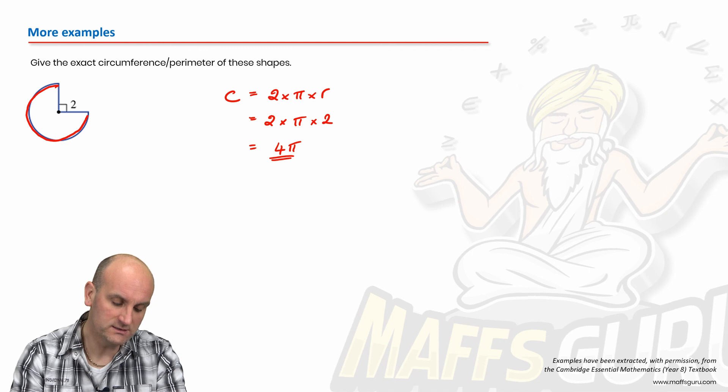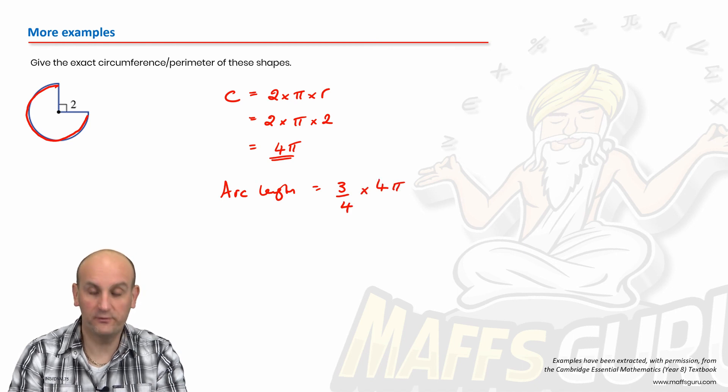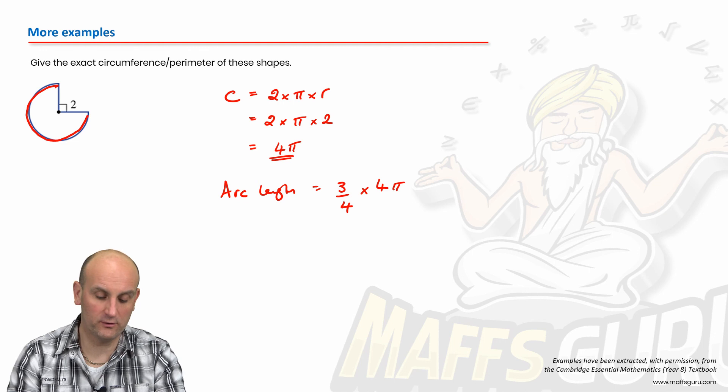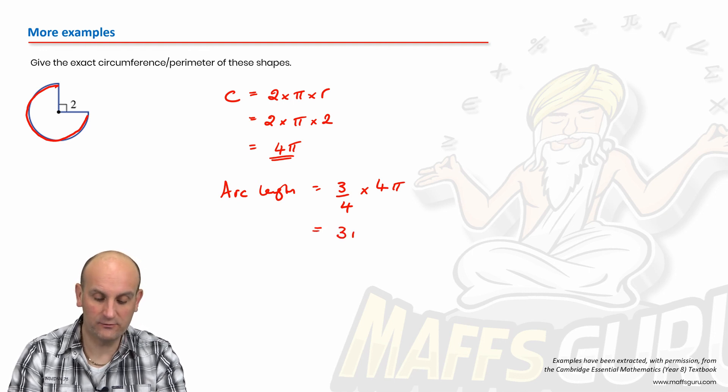But how much of my circle do I have? Well, I've got 3 quarters of it. So I now know that my arc length is equal to 3 quarters of 4 pi. So it's 3 quarters of that whole circle. Putting that into my calculator, funny enough, what I'm going to end up with is 3 pi.